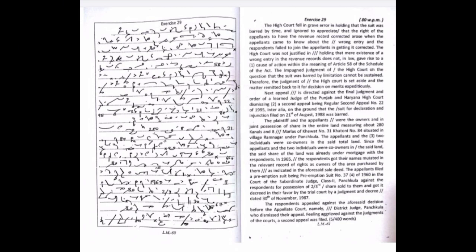The High Court fell in grave error in holding that the suit was barred by time, and ignored to appreciate that the right of the appellants to have the revenue record corrected arose when the appellants came to know about the wrong entry and the respondents failed to join the appellants in getting it corrected. The High Court was not justified in holding that mere existence of a wrong entry in the revenue records does not, in law, gave rise to a cause of action within the meaning of Article 58 of the Schedule of the Act. The impugned judgment of the High Court on the question that the suit was barred by limitation cannot be sustained. Therefore, the judgment of the High Court is set aside and the matter remitted back to it for decision on merits expeditiously.